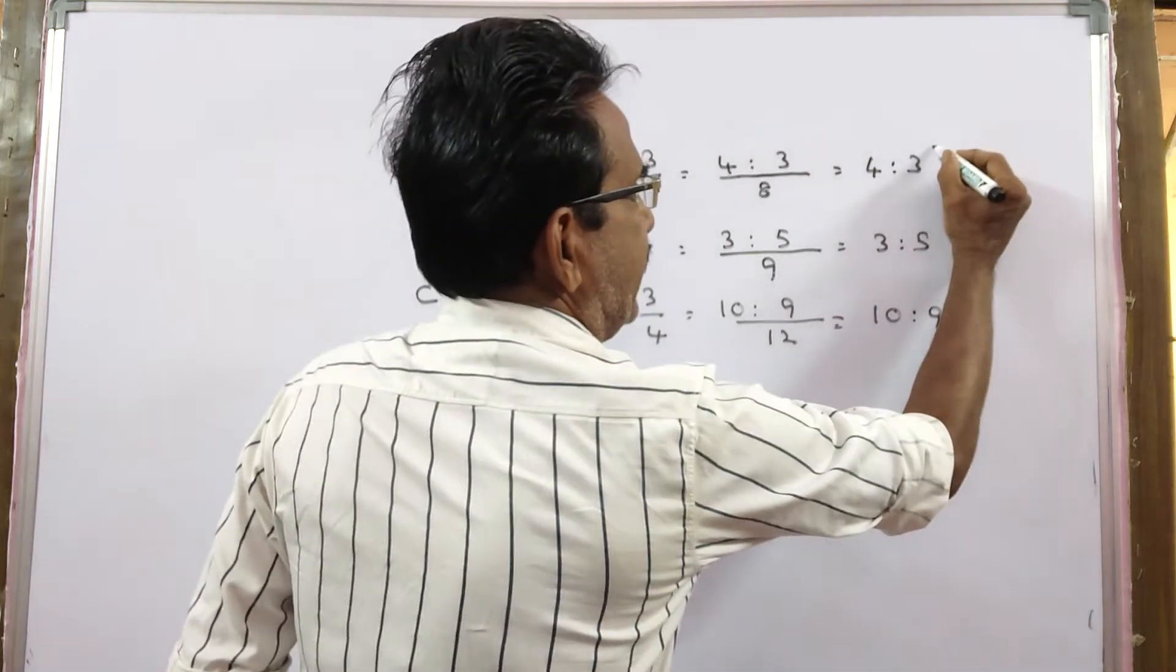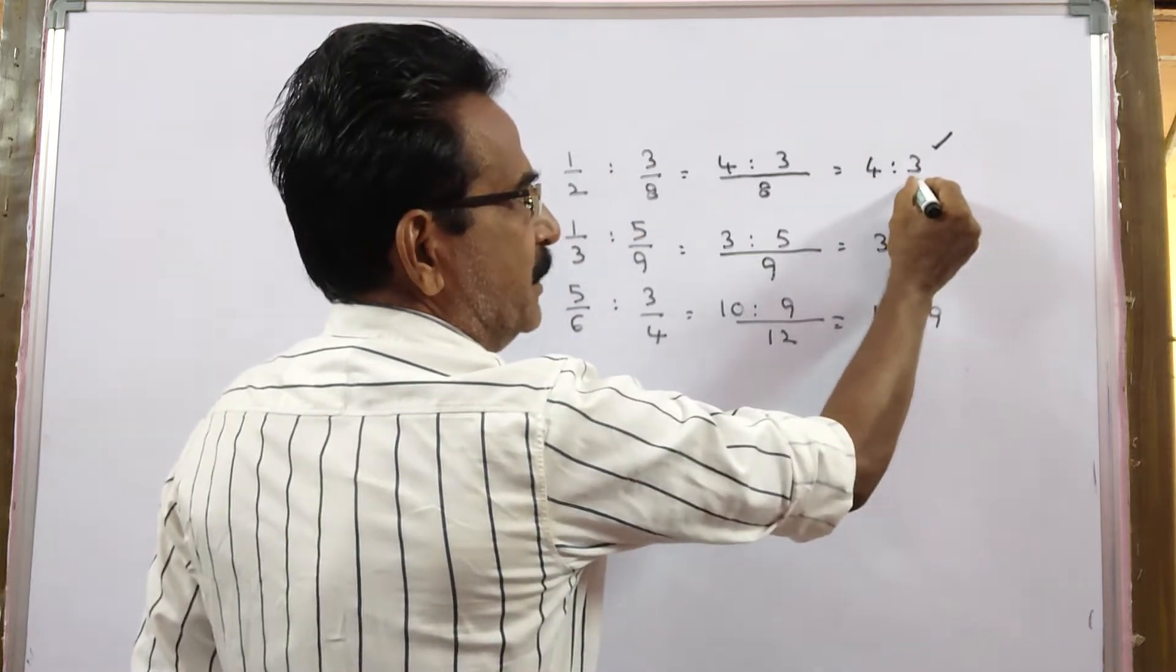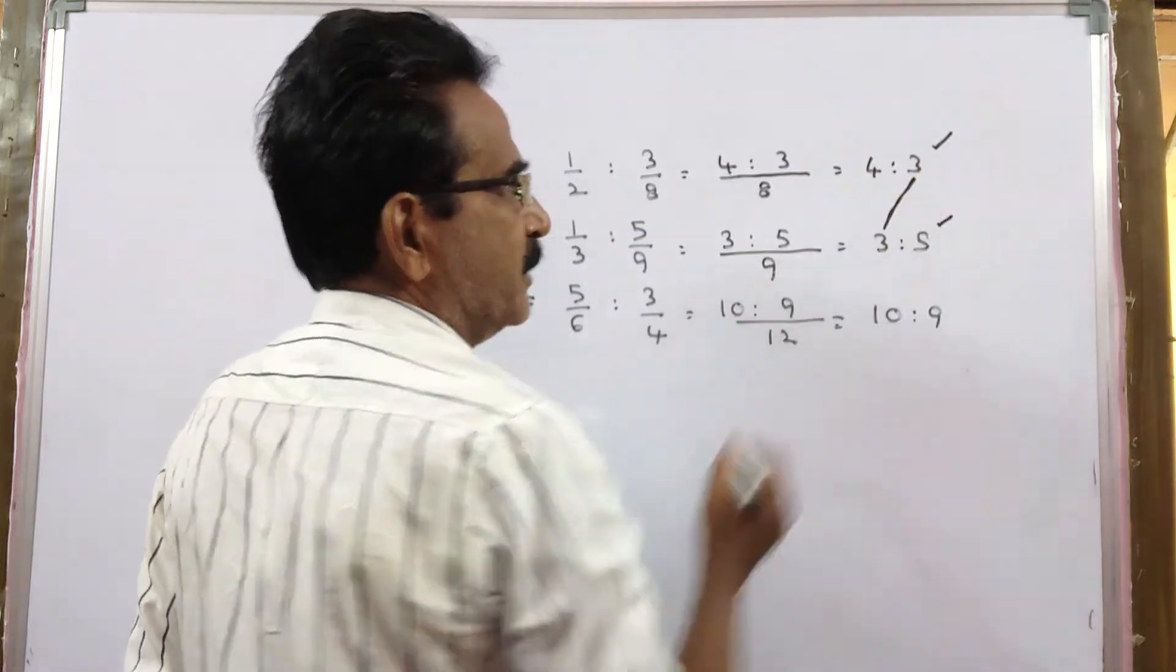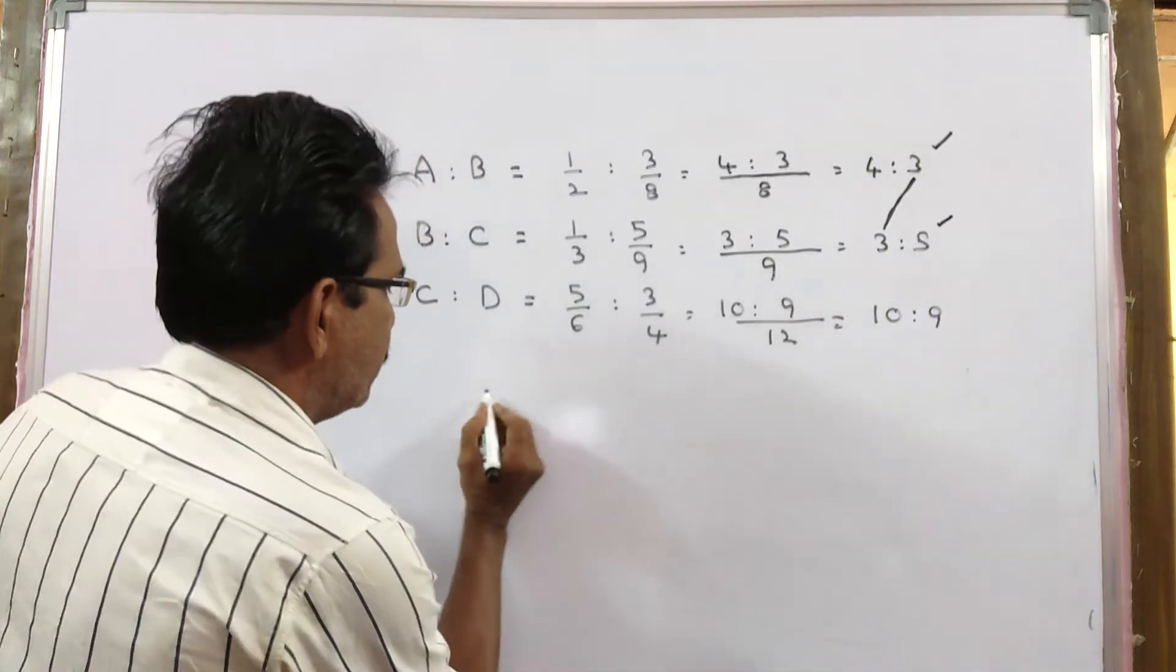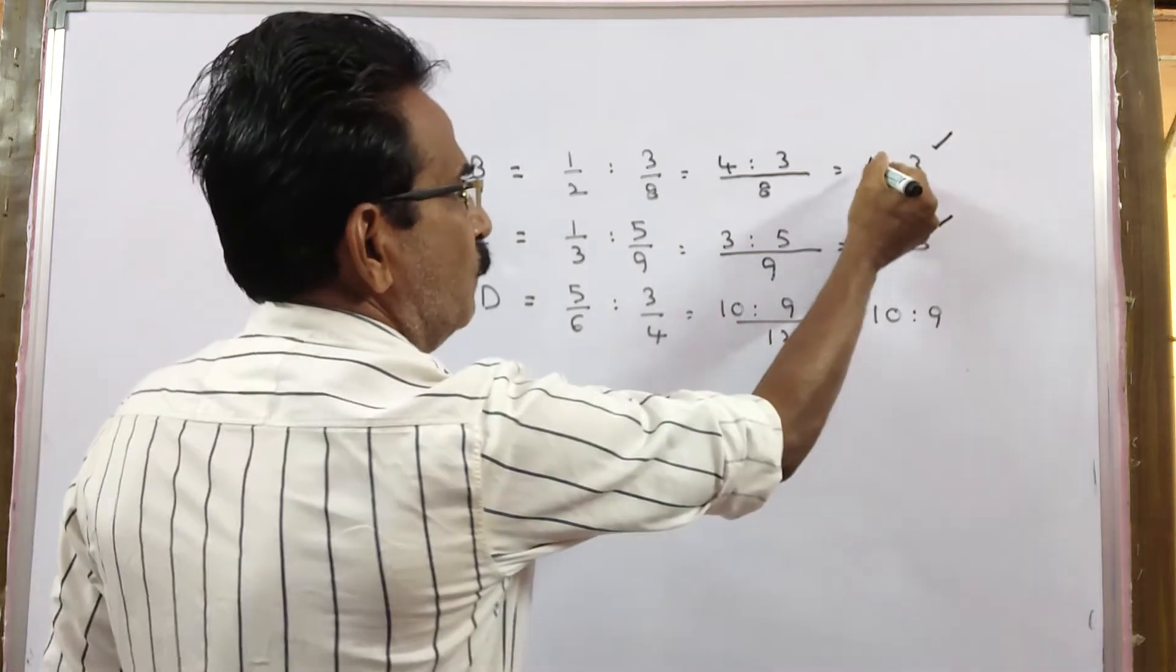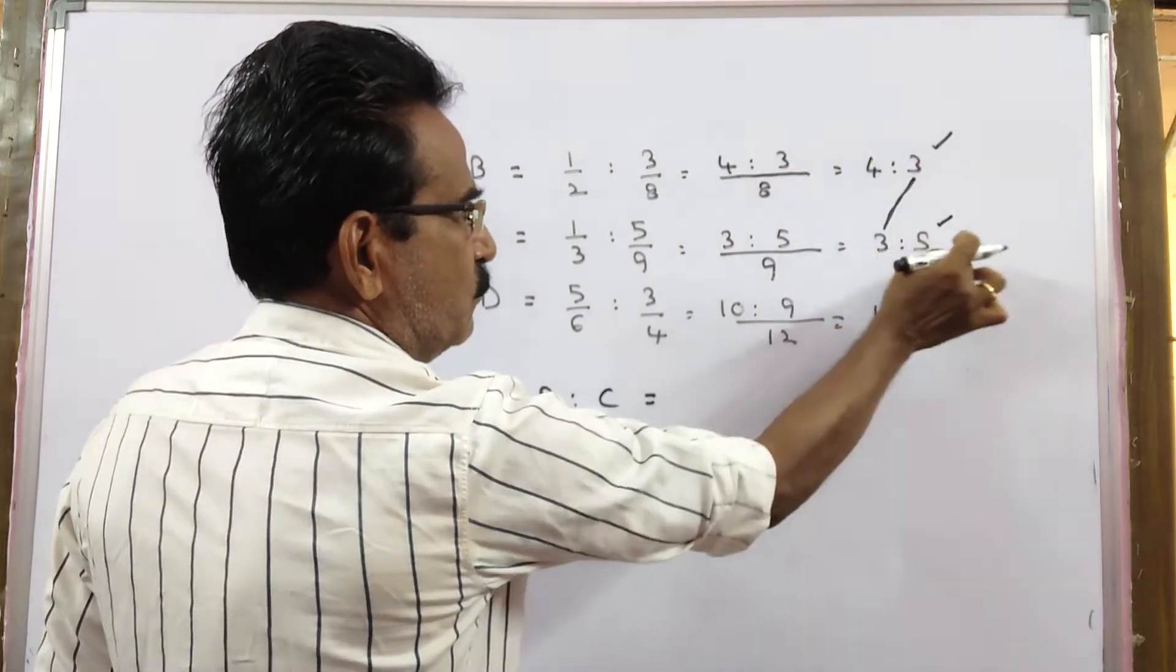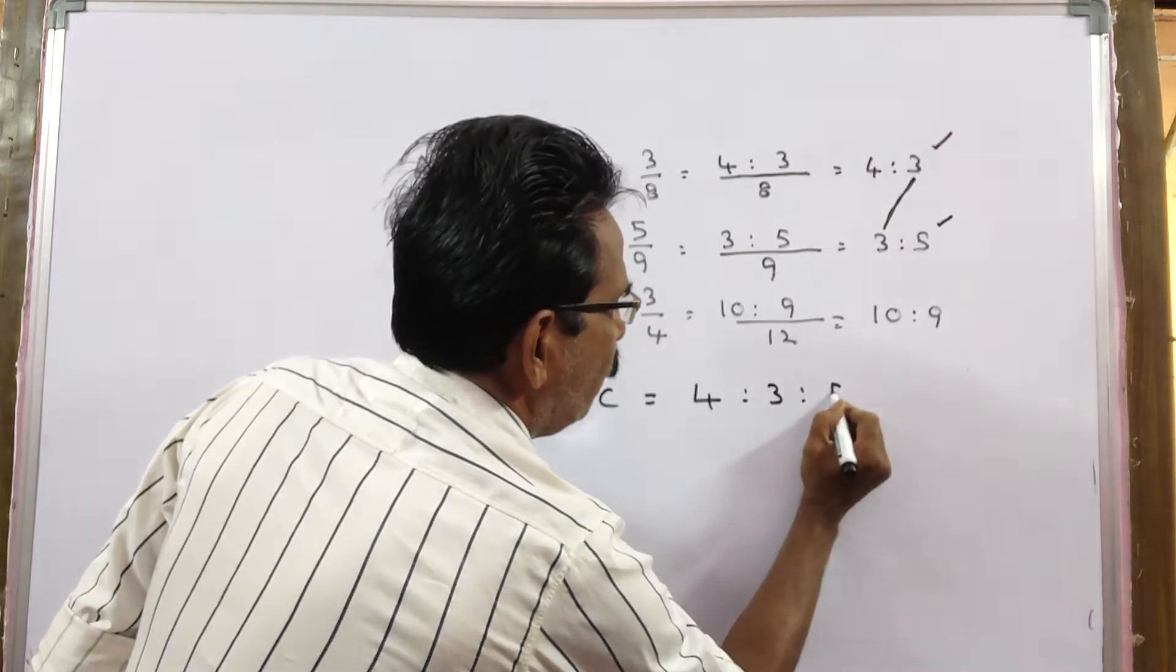See friends, this is A is to B, this is B is to C. Here B terms are equal, so we can directly write A is to B is to C. A is to B is to C is equal to 4 is to 3 is to 5.